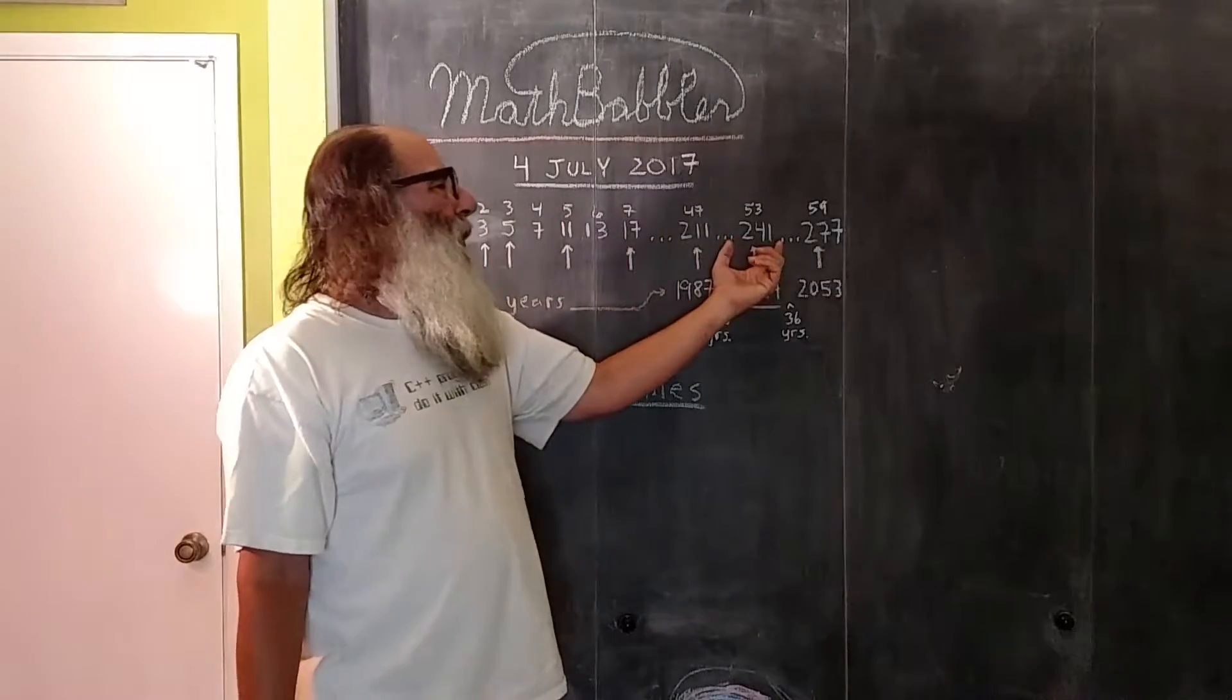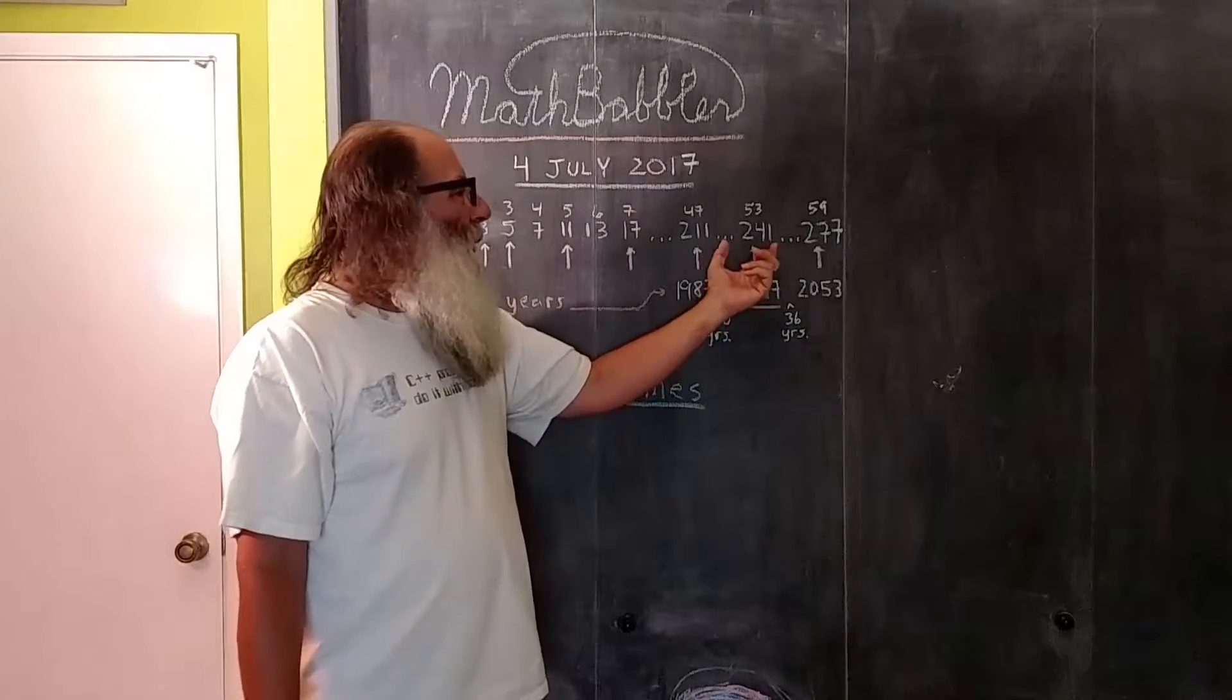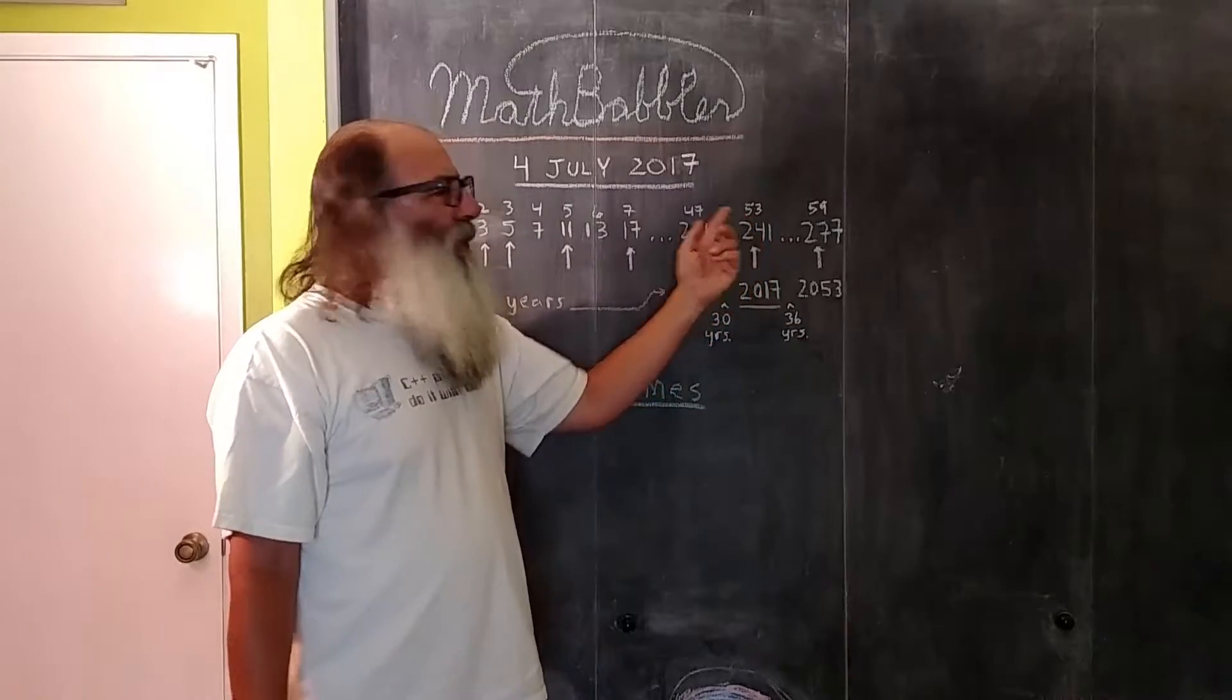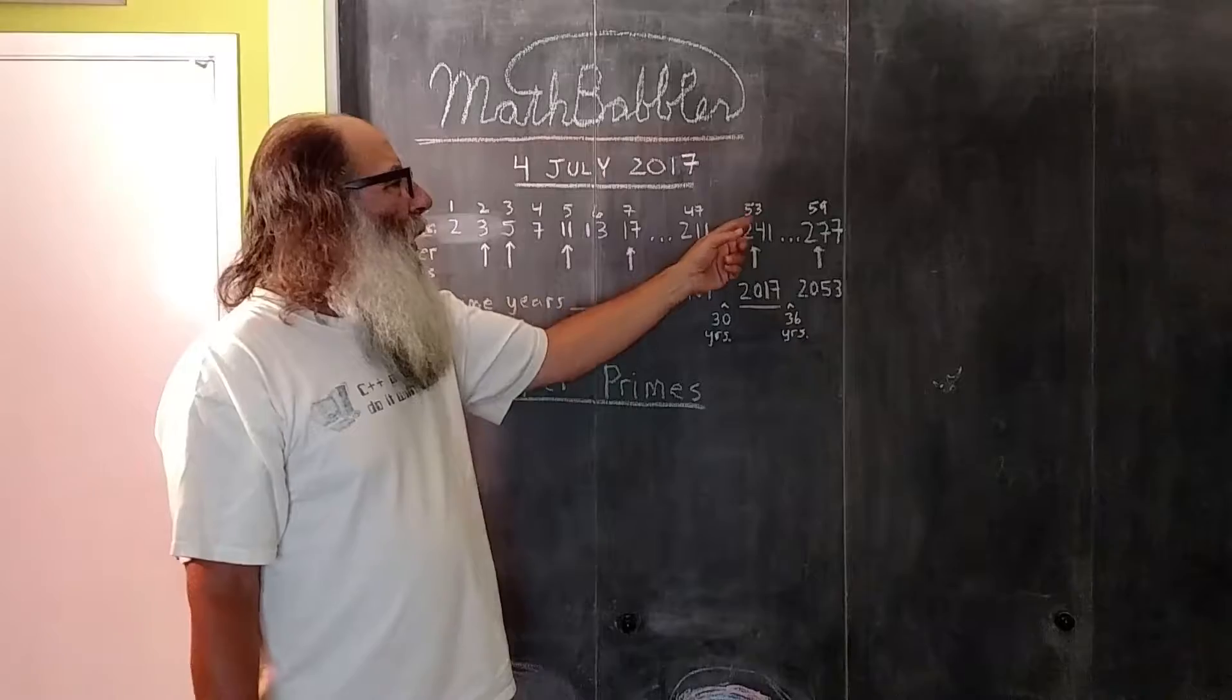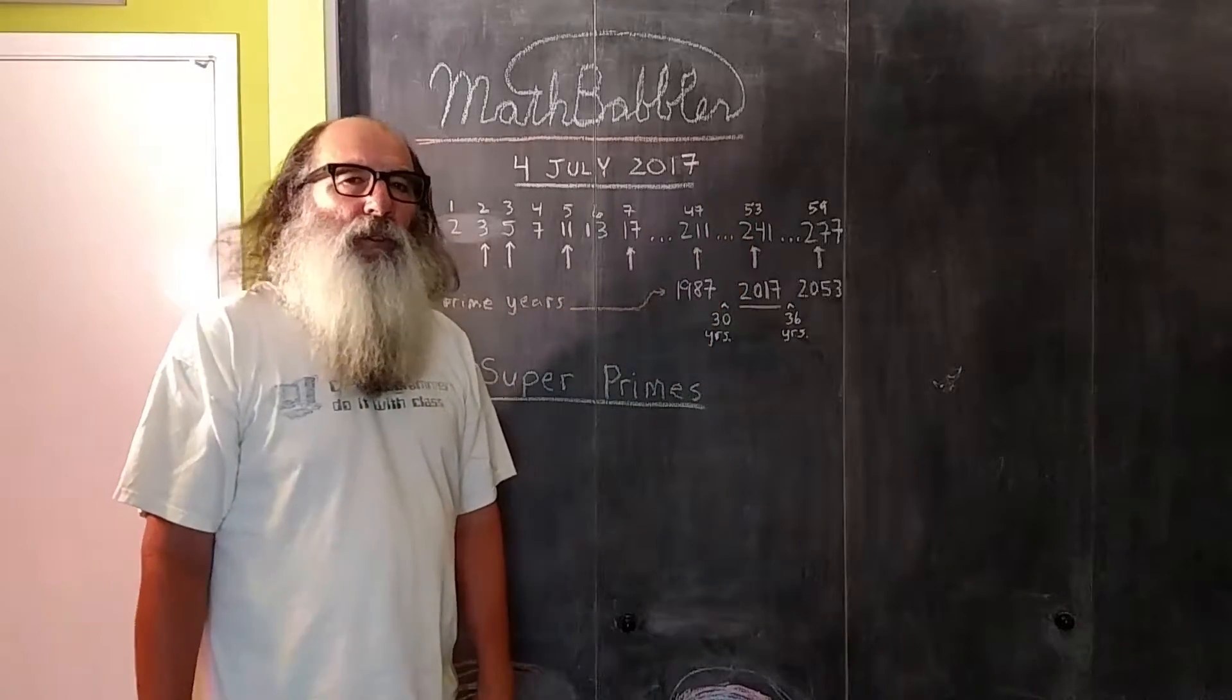So let's fast forward to 241. 241 is the 53rd prime number. 53 is prime, so that makes 241 super prime.